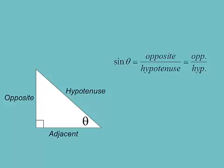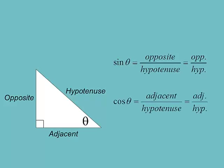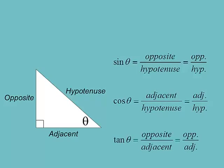There are three basic functions: sine, cosine, and tangent. Sine is simply the ratio of the opposite side over the hypotenuse. Cosine is the ratio of the adjacent side over the hypotenuse — adjacent over hypotenuse. Sine and cosine are just ratios — no units. And the third basic function is tangent, which is the ratio of opposite over adjacent.